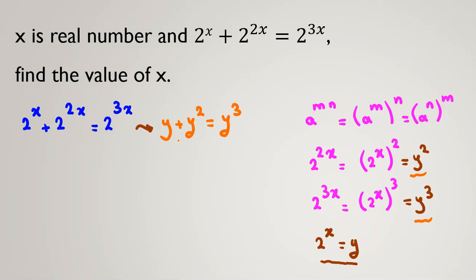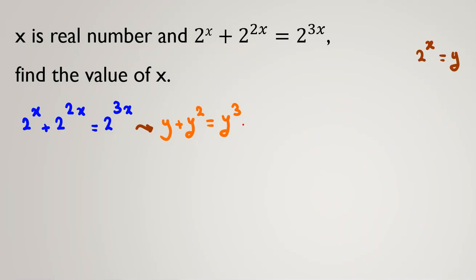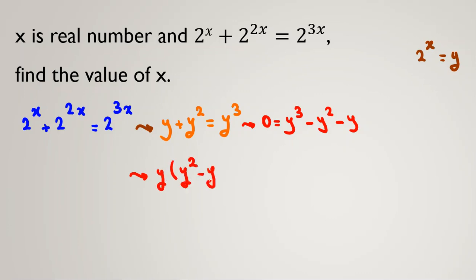Now I have a cubic equation. Taking everything to one side: 0 equals y cubed minus y squared minus y. I can factor out y to get y times the quantity y squared minus y minus 1 equals 0.